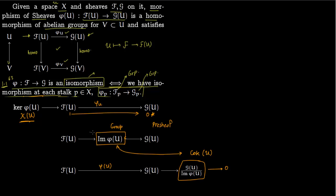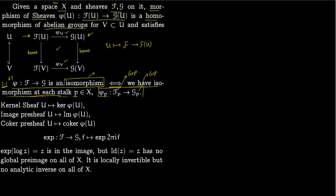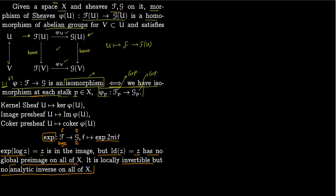Now let us give an example of an image pre-sheaf which is not a sheaf. Consider the exponential map going from F to G, where F and G are sheaves of rings. It takes a function f lying in F and maps it to e^{2πif} in G. Now e^{log z} = z, so log z is in the image. But the identity function id(z) = z has no global pre-image on all of X — it is locally invertible but does not have an analytic inverse on all of X. So this is a pre-sheaf but not a sheaf because globally there is no inverse.